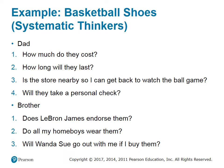For example, with basketball shoes: a systematic thinker — like a dad — asks how much they cost, how long they'll last, whether the store is nearby, and whether they take a personal check. A heuristic thinker — like a younger brother — asks whether LeBron James endorses them, whether all his friends wear them, and whether a girl will go out with him if he buys them.